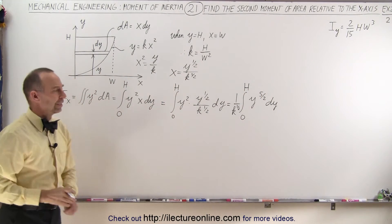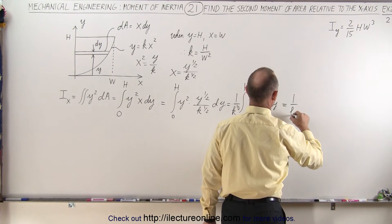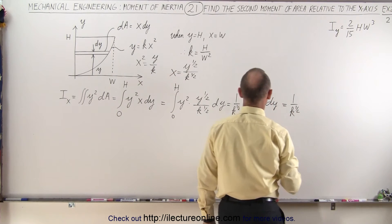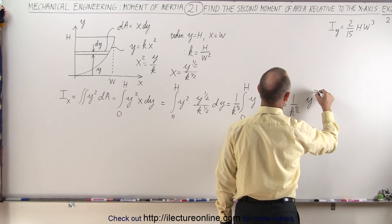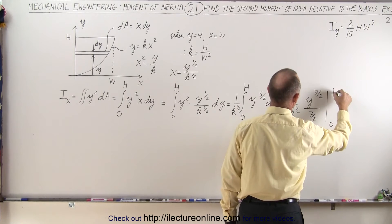And that's a fairly easy integral, so that becomes 1 over k to the one-half times y to the seven-half power divided by 7 over 2, evaluated from 0 to h.